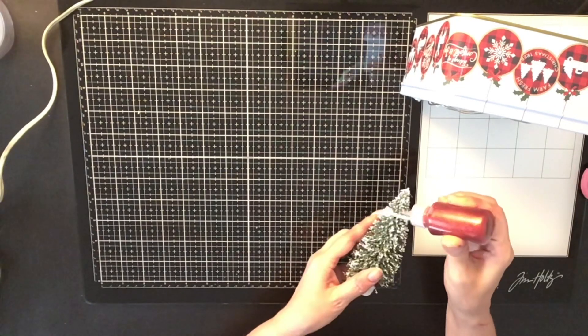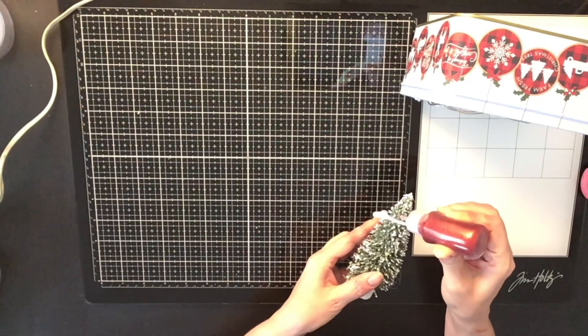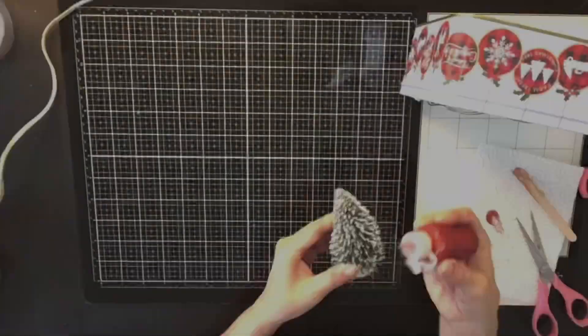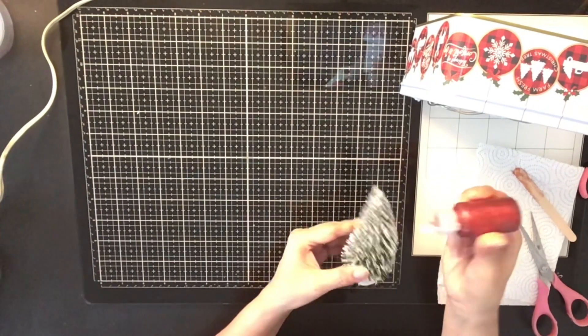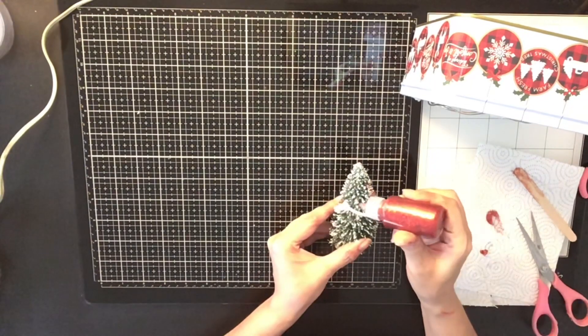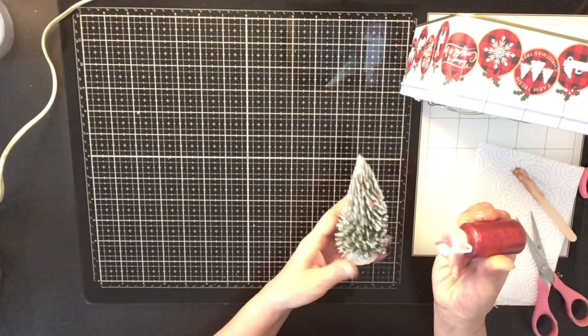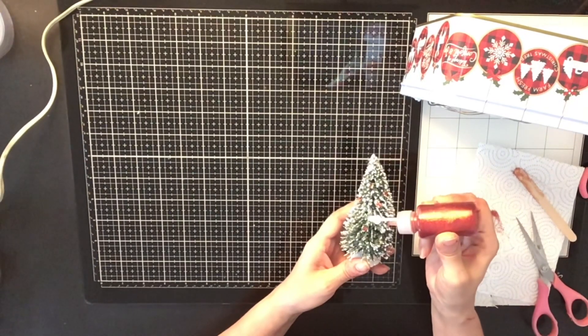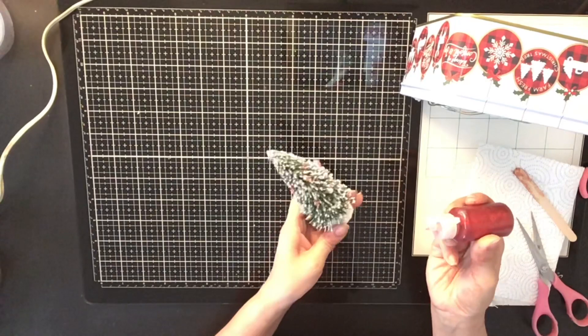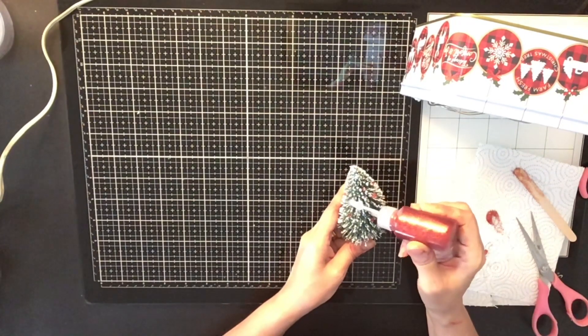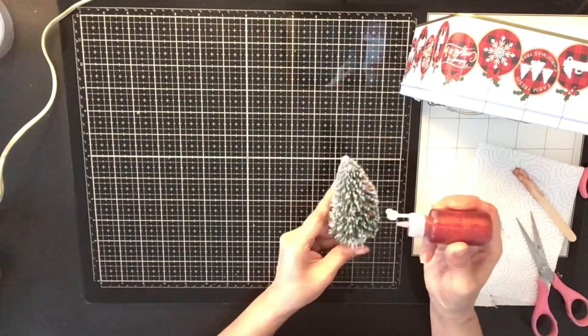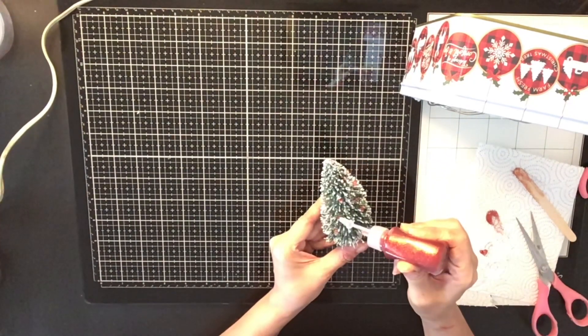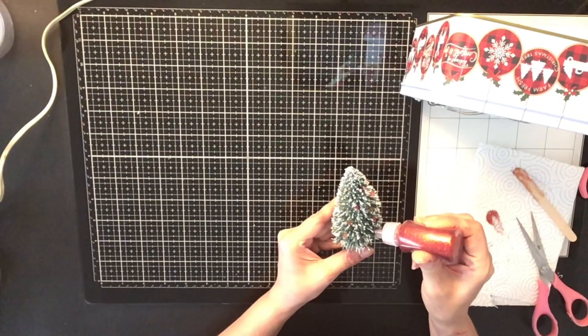So then I got these trees also from the Dollar Tree and I used some glitter glue that I also purchased at the Dollar Tree. And I decided to spruce up my trees a little bit and I wanted them to have some ornaments. So what I did is I just took the glue, the glitter glue, and I just made little ornament balls on my tree. You got to be careful though because the glitter glue takes a long time to set. So just be really, really careful. And there are my little ornaments.